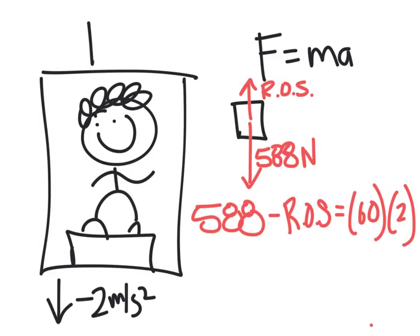Okay. So if we solve for reading on the scale, we would end up with 588 minus 120, which looks like 468 newtons. Notice how reading on the scale is less than the force in the downward direction, or weight. Therefore, Joey is accelerating downward.